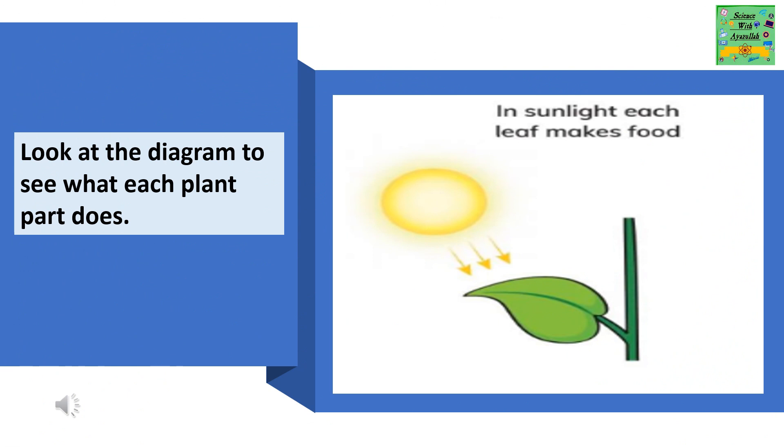Look at the diagram to see what each plant part does. In sunlight, each leaf makes food.